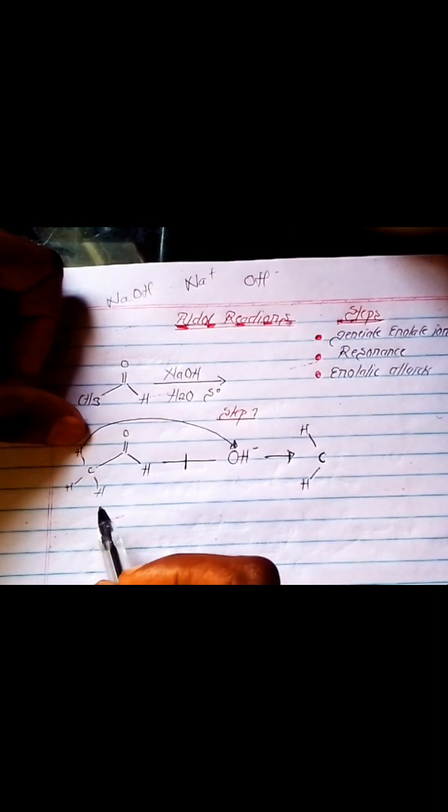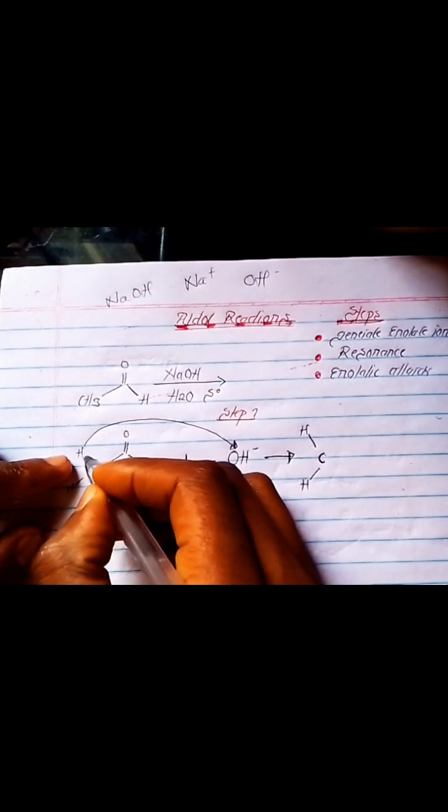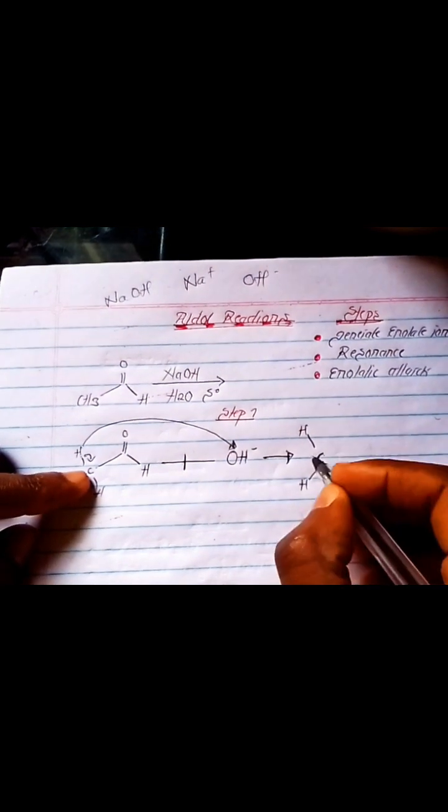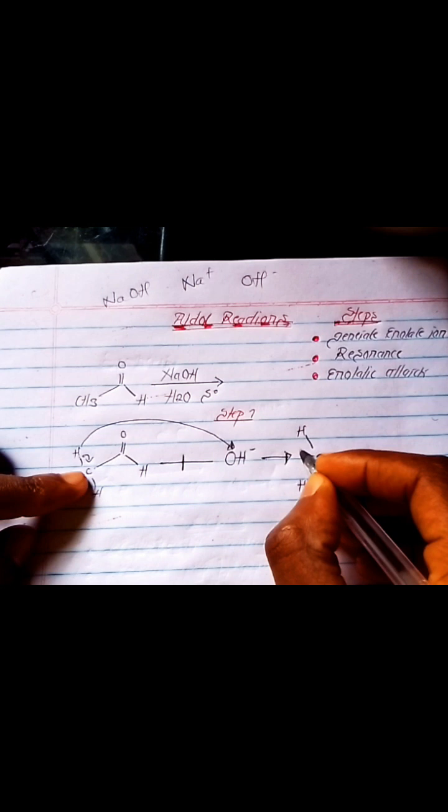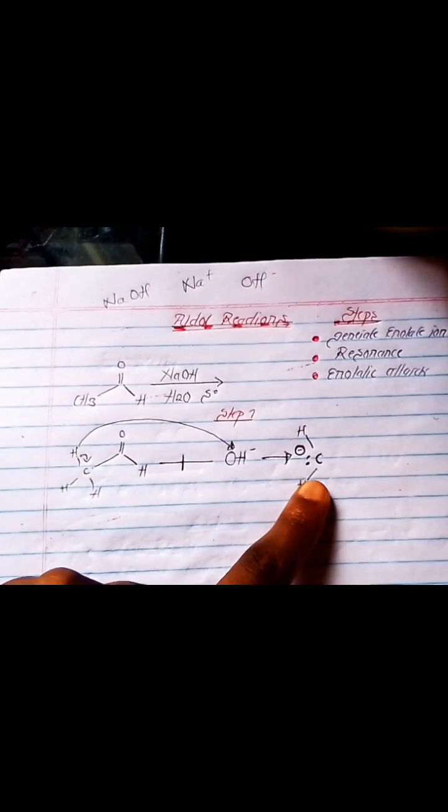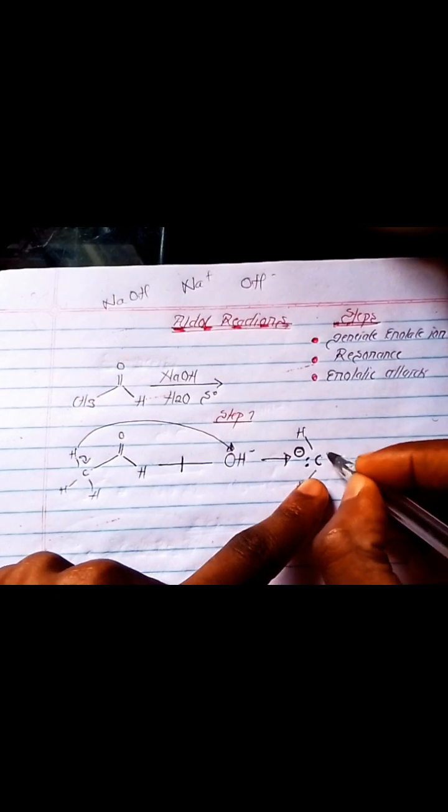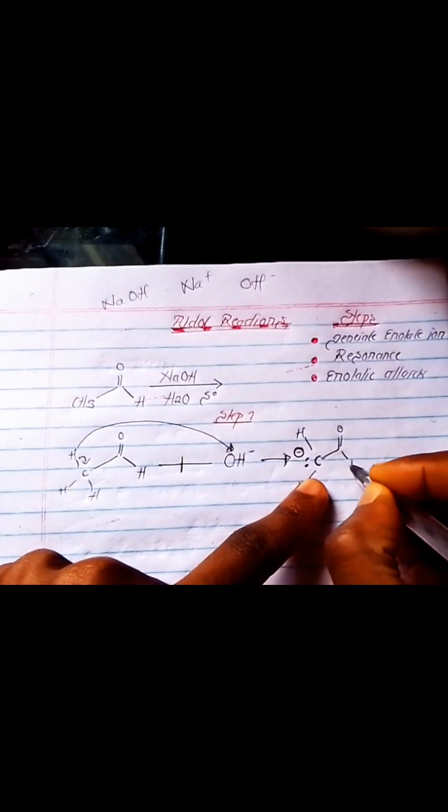And then the next thing I'll see is that when this hydrogen goes, it doesn't go with the pair of electrons. Instead, it leaves them behind. When it leaves them behind, this pair of electrons are here. This creates a negative charge, making this a carbanion.